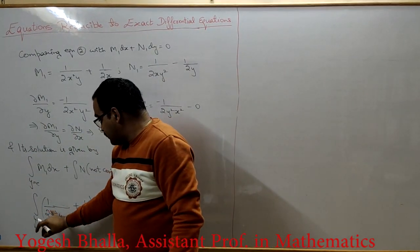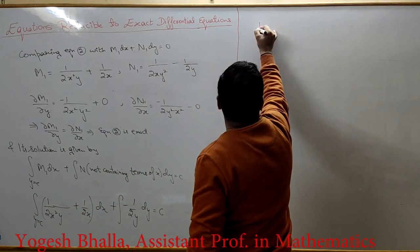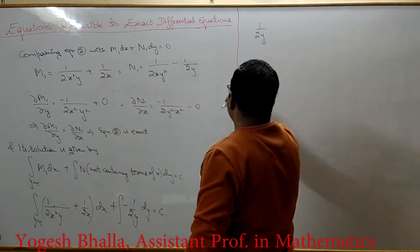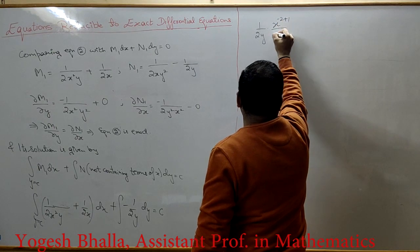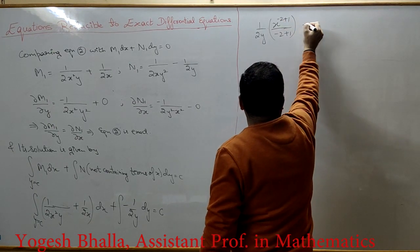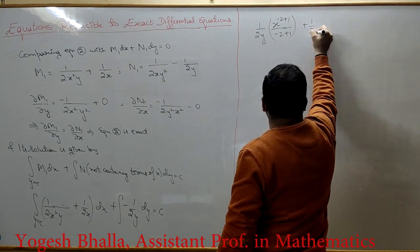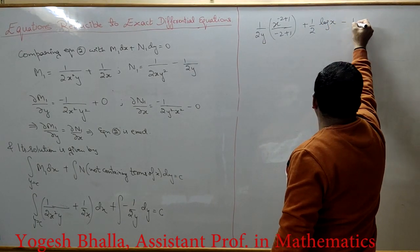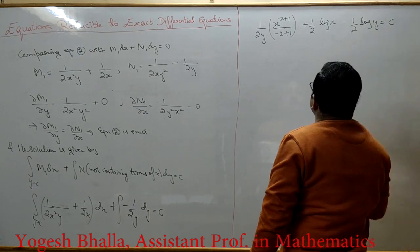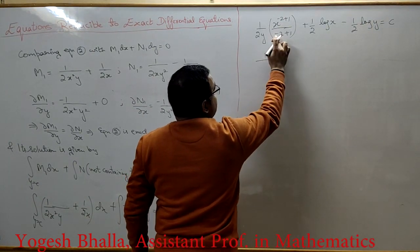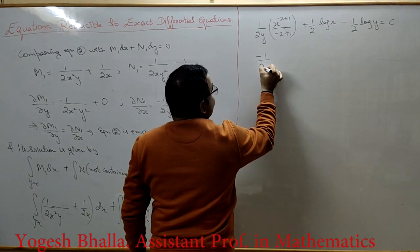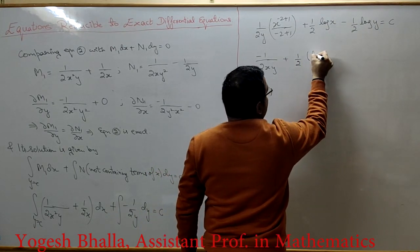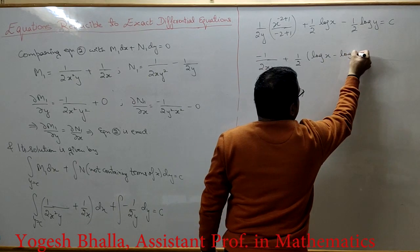Integrating M1 with respect to x, keeping y constant: ∫1/(2x²y) dx = (1/2y)·(x^(−2+1)/(−2+1)) = −1/(2xy); and ∫1/(2x) dx = (1/2)log x. Then adding ∫−1/(2y) dy = −(1/2)log y. So the solution is −1/(2xy) + (1/2)log x − (1/2)log y = c.